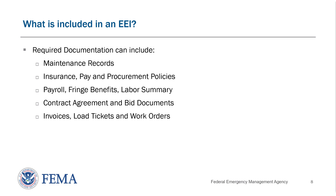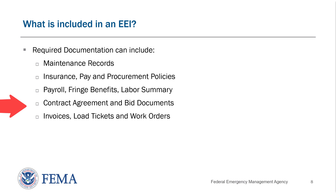Your responses to the EEI questionnaire generate a list of documents you will be required to provide. These documents can include things like maintenance records, insurance, pay, and procurement policies, payroll, fringe benefits, labor summaries, contract agreements and bid documents, invoices, load tickets, and work orders. You will provide the necessary documentation by uploading and attaching documents to meet each requirement. FEMA provides some standardized forms that you can use to summarize required information. You do not have to use FEMA's forms, but you must provide all of the information asked for in them. These are called summary sheets and are available on FEMA.gov.